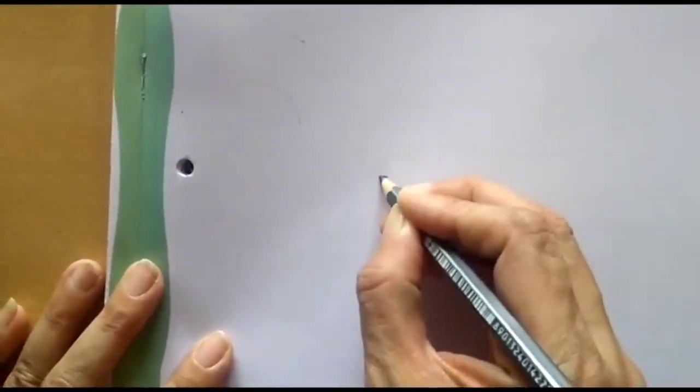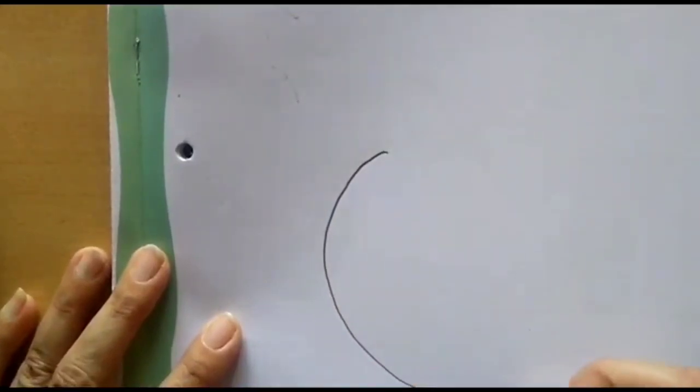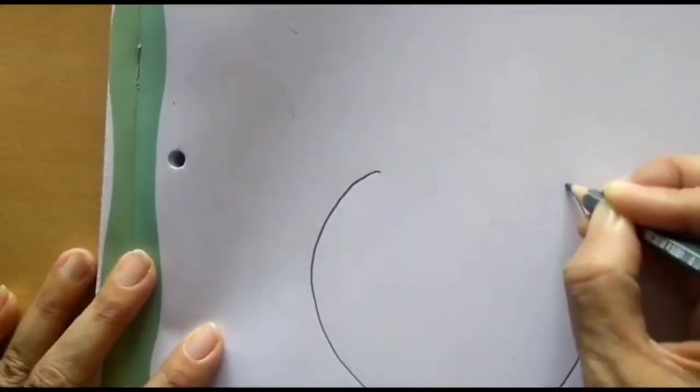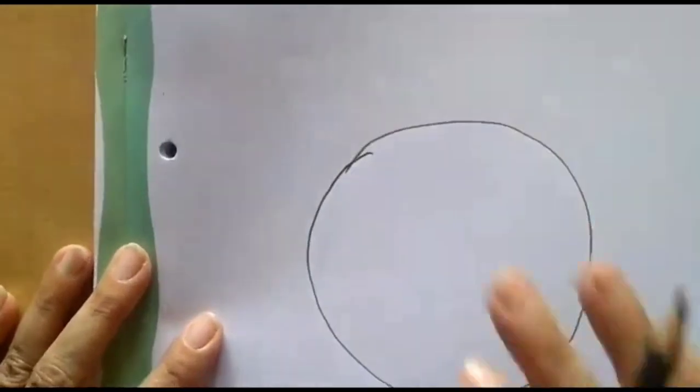Let me draw it the way I want it. First I will draw a circle. You can draw the way you want to.